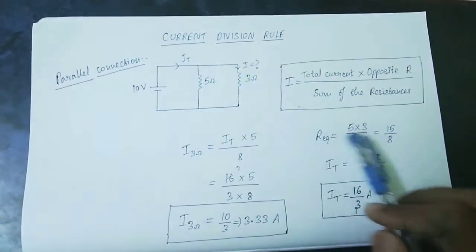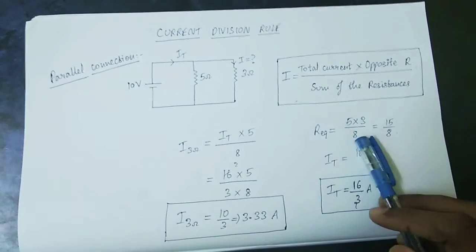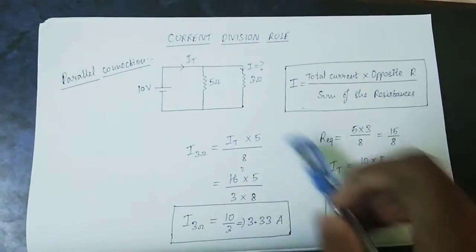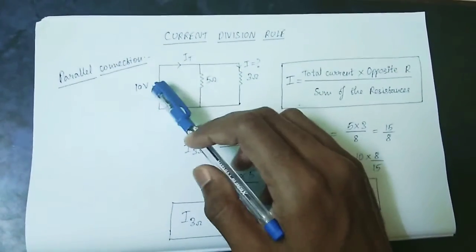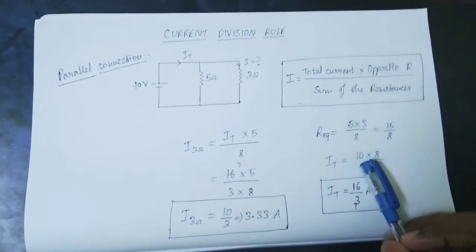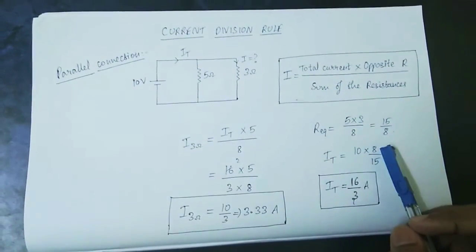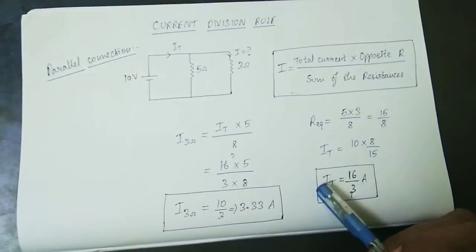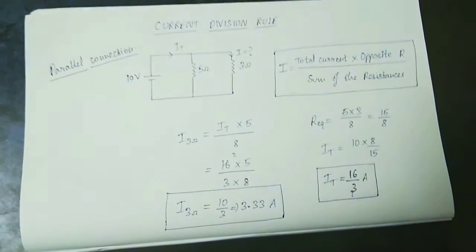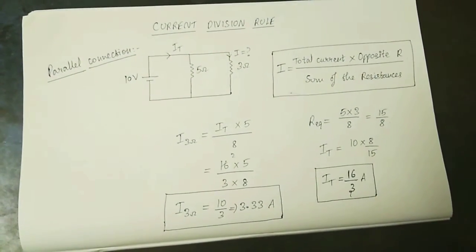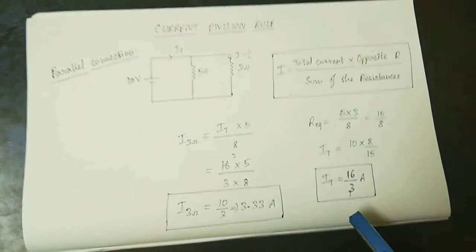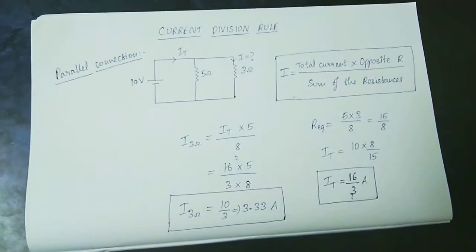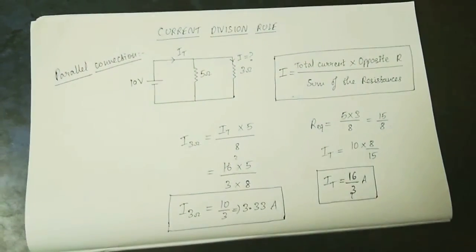The total current is V divided by R — 10V divided by 15/8 — which gives 10 multiplied by 8/15, equal to 80/15, approximately 16 by 3 amperes, which is about 5.3 amps.